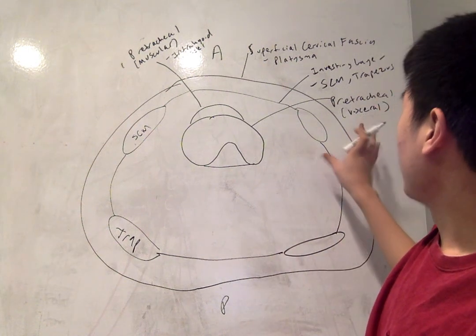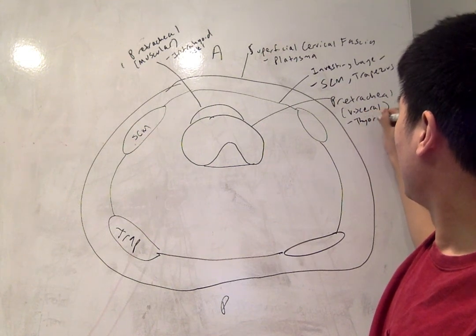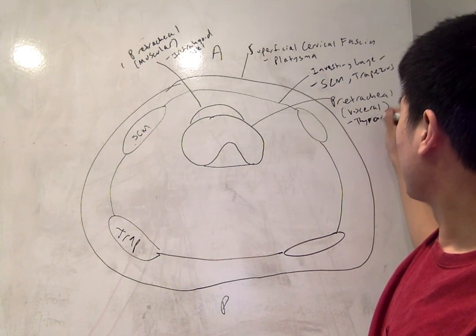As for the visceral layer, we already said that it has the thyroid, esophagus, and trachea.